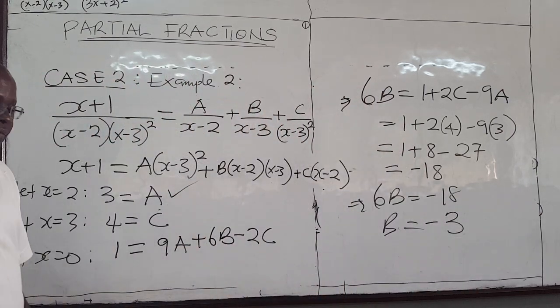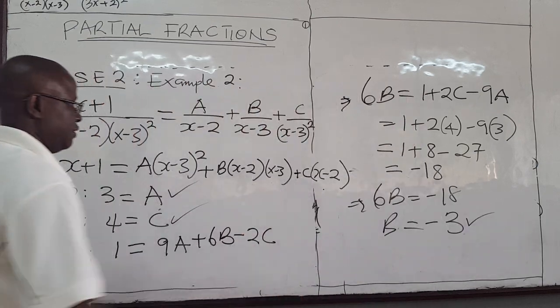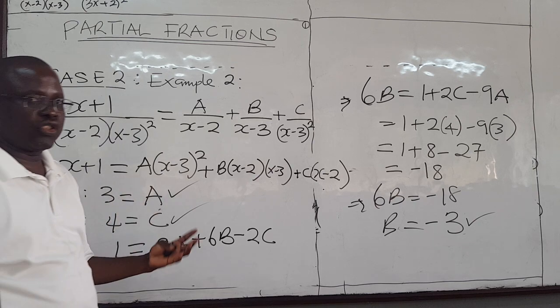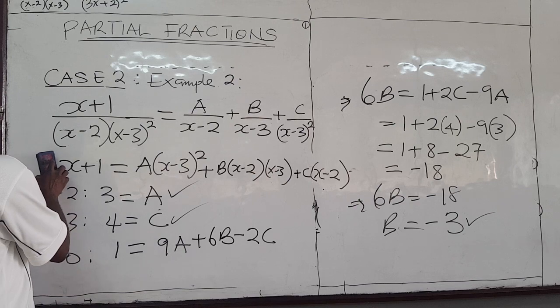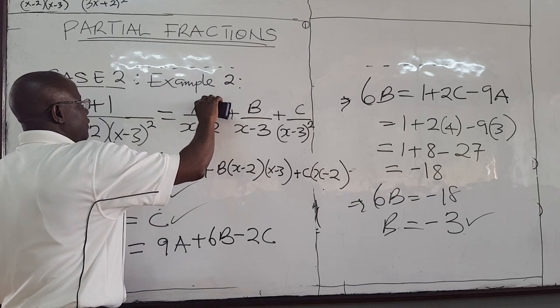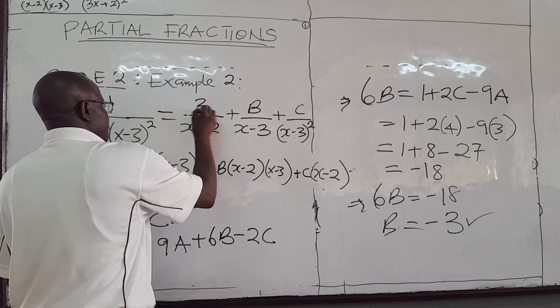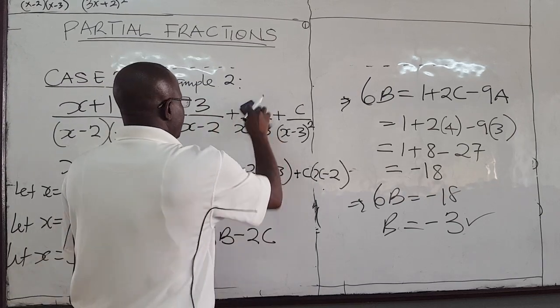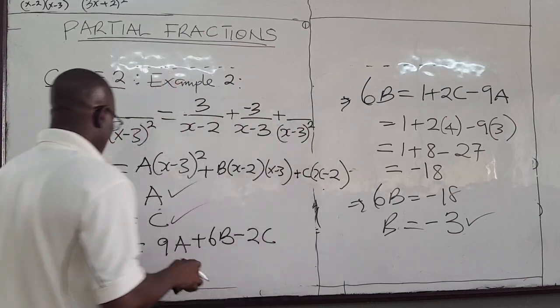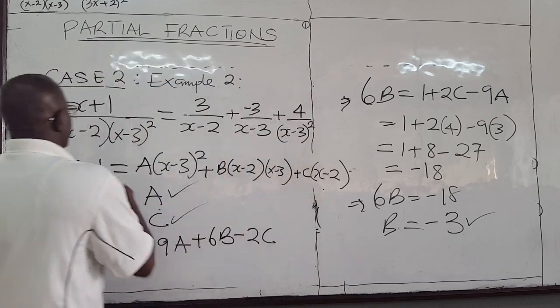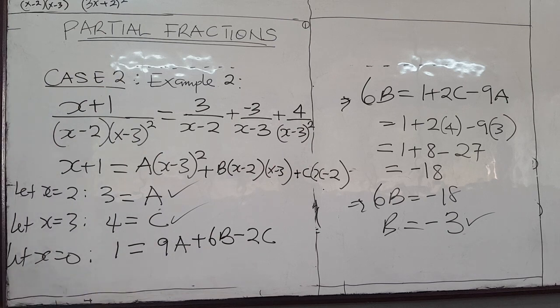So we have A, we have A, we have B, and we have C. You put them back in here and you have your partial fractions. So finally you write down, I'm just going to come here. A is 3, B is negative 3, C is what? It's 4. So this, I mean, broken down, I mean, decompose into these partial fractions.